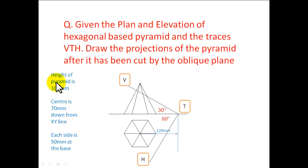We are also giving information over here. The height of the pyramid is 100mm. From the XY line down to the center of the pyramid is 70mm, and each side of the base is 50mm. We are also giving the angle of the VT, the angle of the HT, and where the VTH hit the XY line.